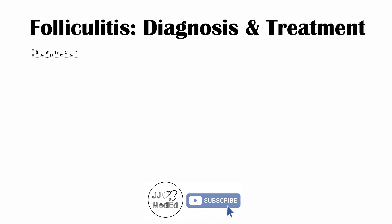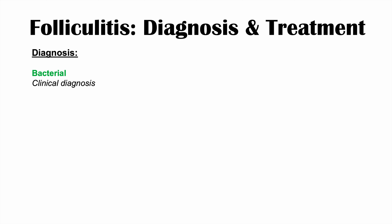How do we diagnose folliculitis? Diagnosis depends on the infectious cause. Bacterial folliculitis is often just a clinical diagnosis — we take the history and observe the appearance of the skin lesions and make the diagnosis from that. For fungal folliculitis, you can do a KOH preparation — a potassium hydroxide preparation — and look for hyphae. For viral folliculitis, you can do skin scraping and check for PCR, or look under the microscope and do immunofluorescence. But most of these will be diagnosed via clinical inspection.